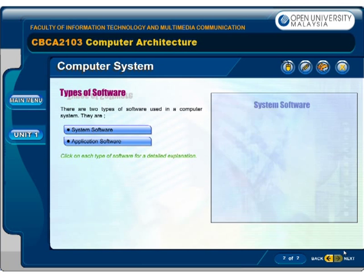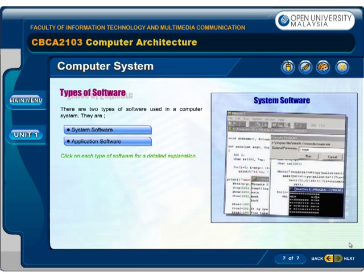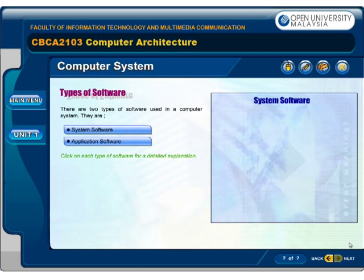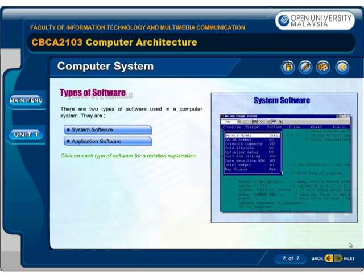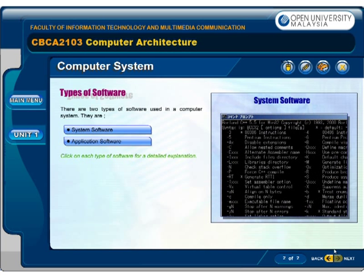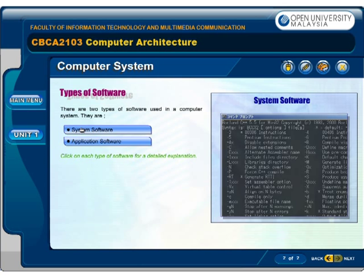There are two types of software used in a computer system. They are system software and application software. Click on each type of software for a detailed explanation.